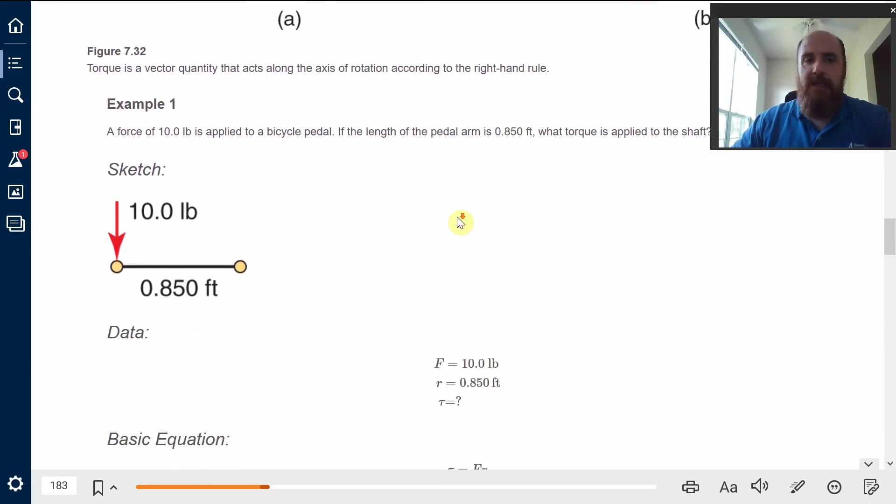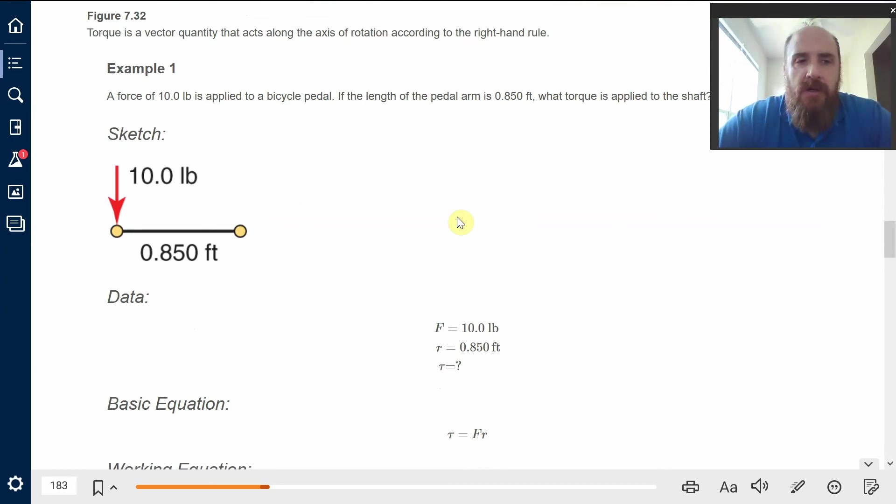So torque is very simple, as long as the distance, the perpendicular distance between the line of force and the axis of rotation is given. You just multiply the force by that distance, you get the torque. The units of torque are pounds multiplied by feet in the British system, or newtons multiplied by meters in the metric system. We have pound-feet of torque, or newton-meters of torque.